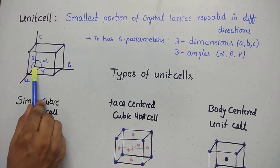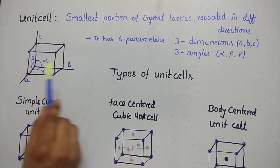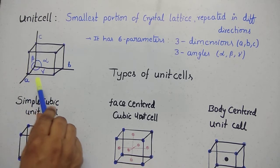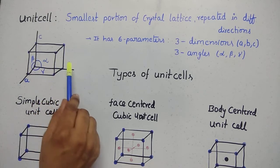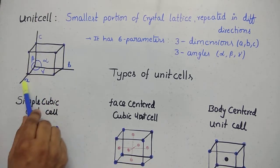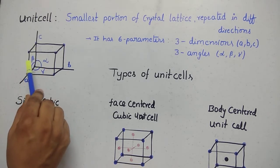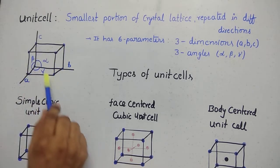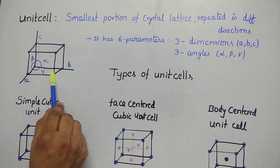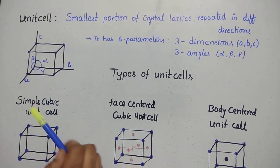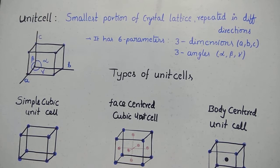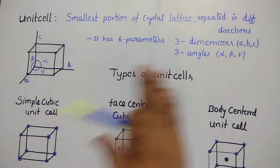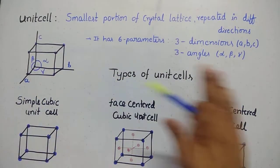A unit cell has dimensions: A dimension, B dimension, C dimension, and it has three angles — alpha, beta, and gamma. The angle between B and C is alpha, the angle between B and A is gamma, and the angle between A and C is beta. These are the parameters of a unit cell. You can see the crystal lattice forms layers, like a cube, and you can see the next layer lattice.